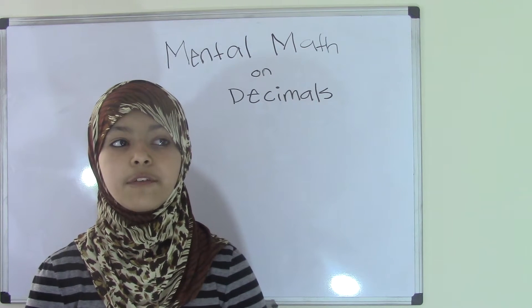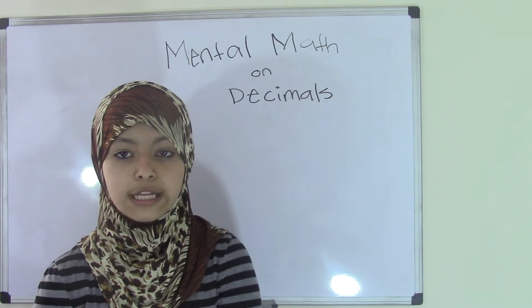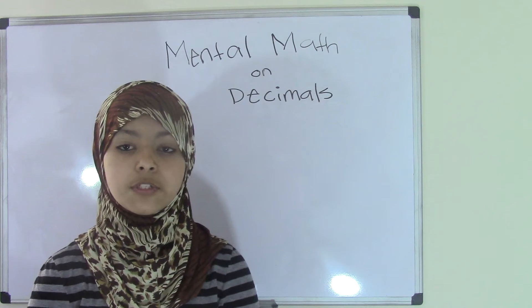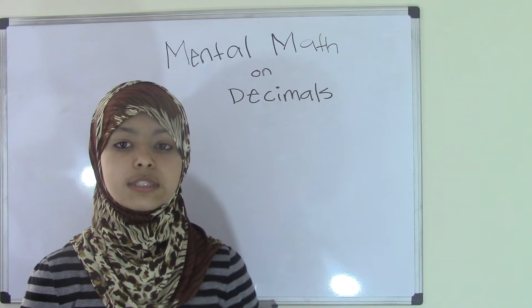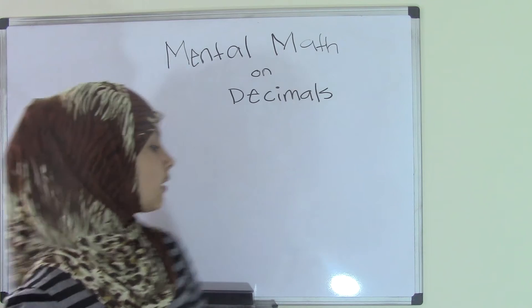For example, if you are given 3.4 plus 6.4 and you have to add those two numbers, the first thing you'll do is separate the whole numbers and the decimals because that makes it easier. Let's write that down.